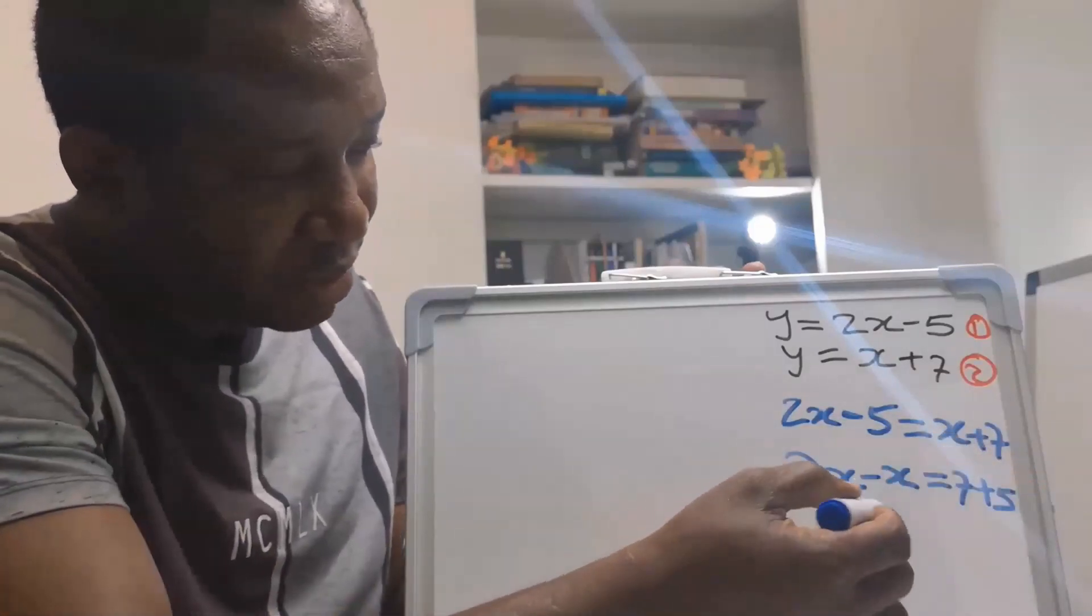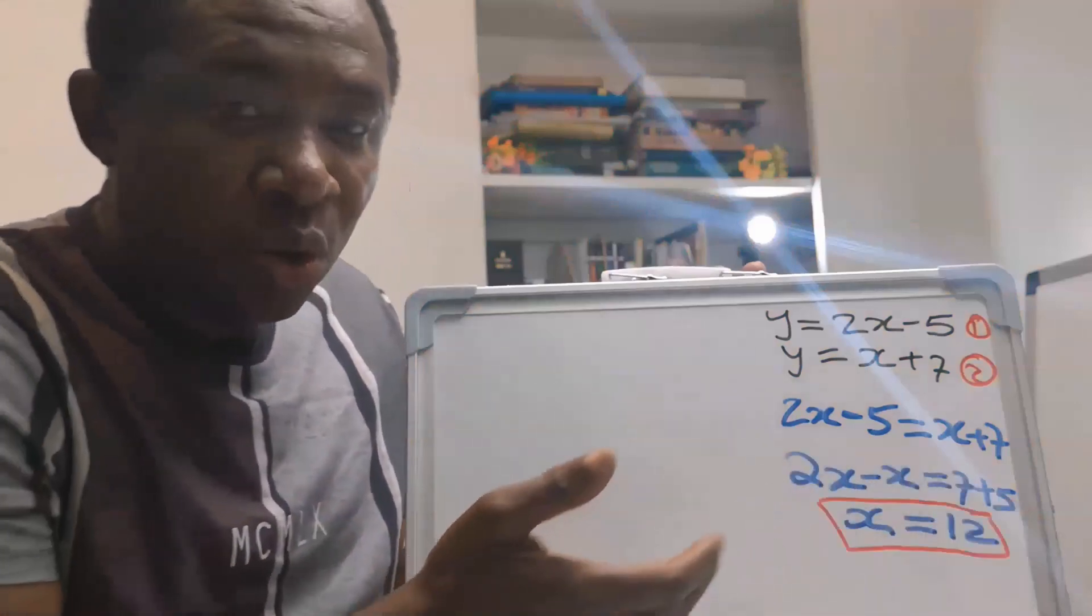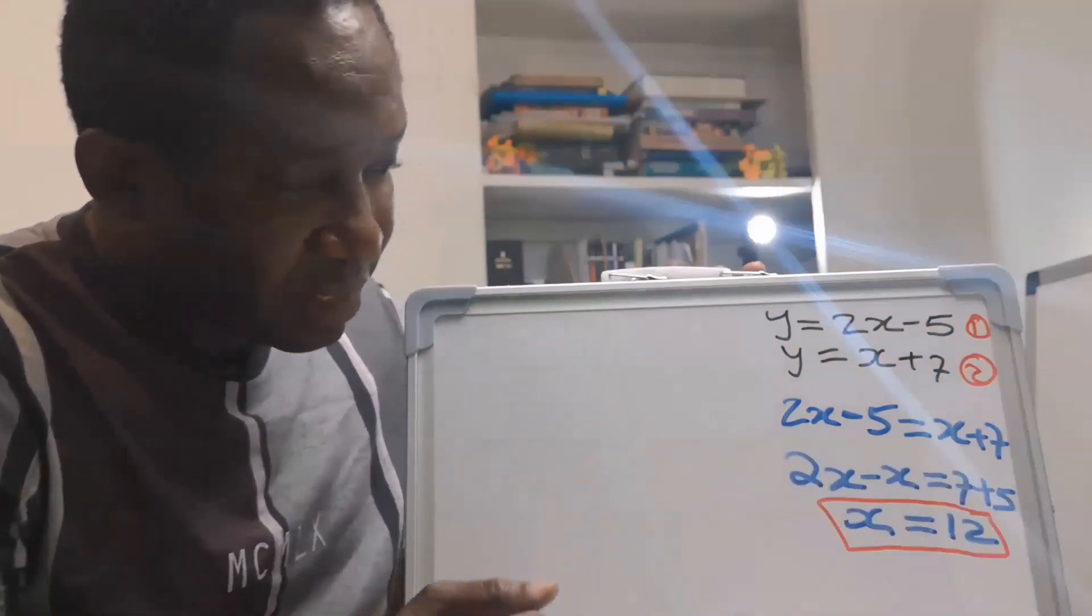2X minus X is X. On the other side, you have 12. We have obtained that X is 12.